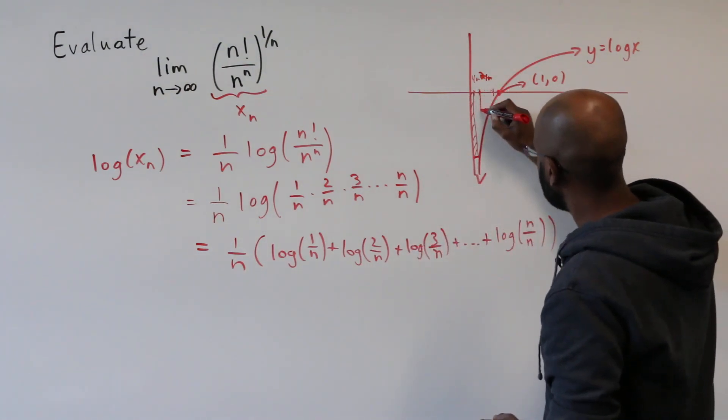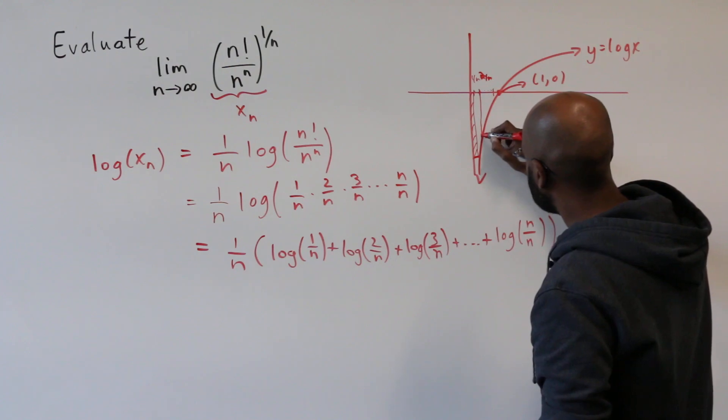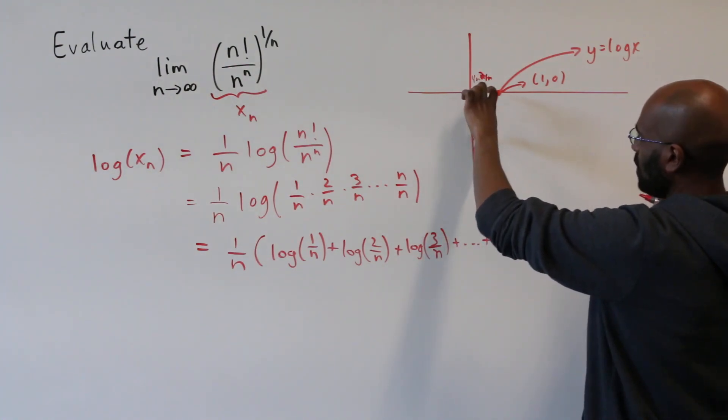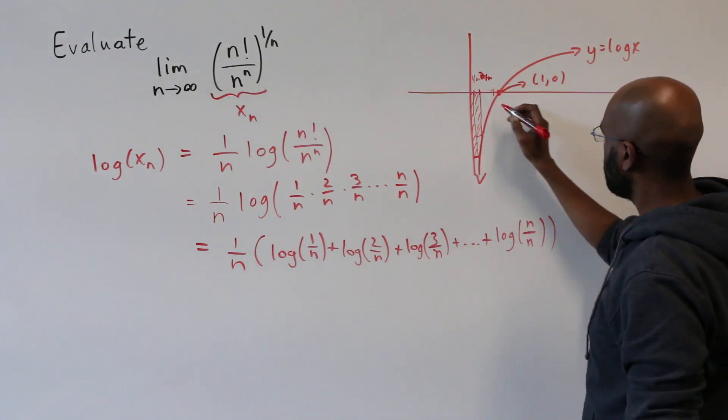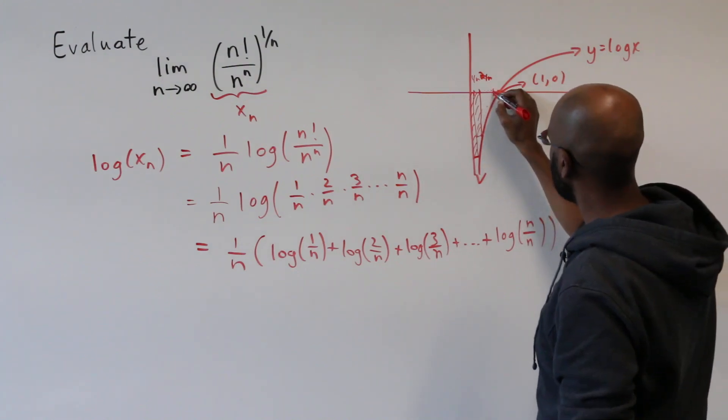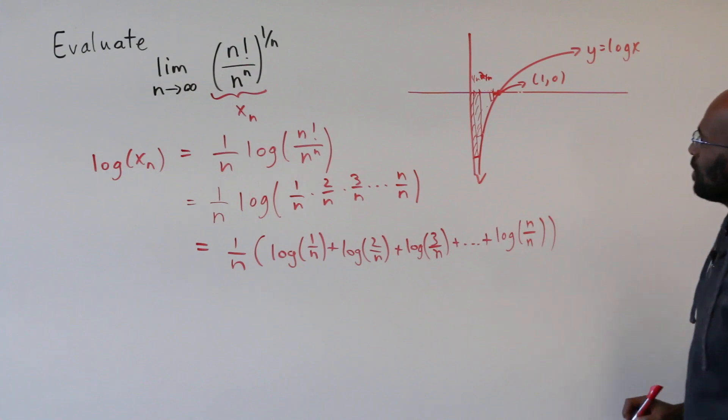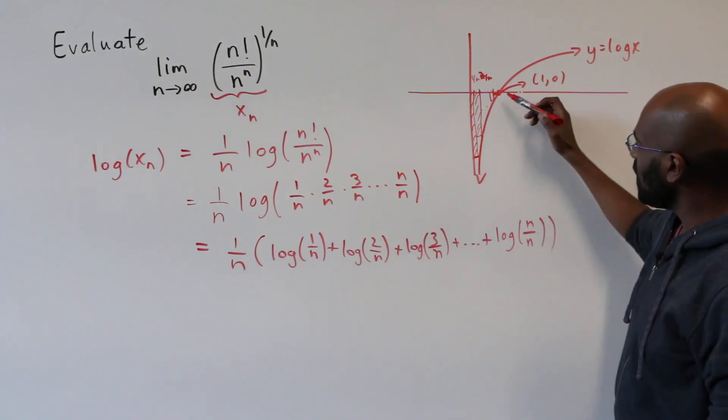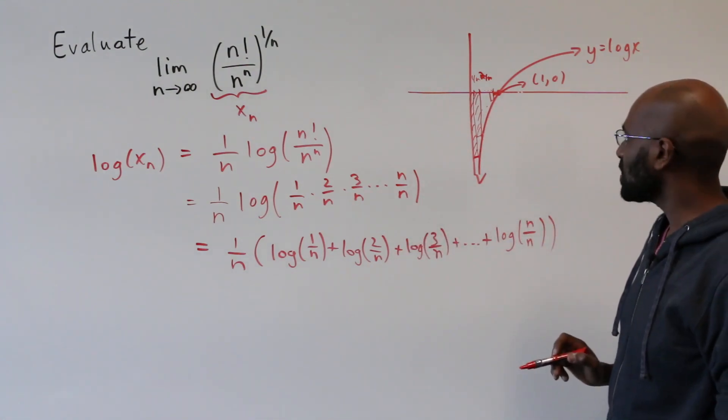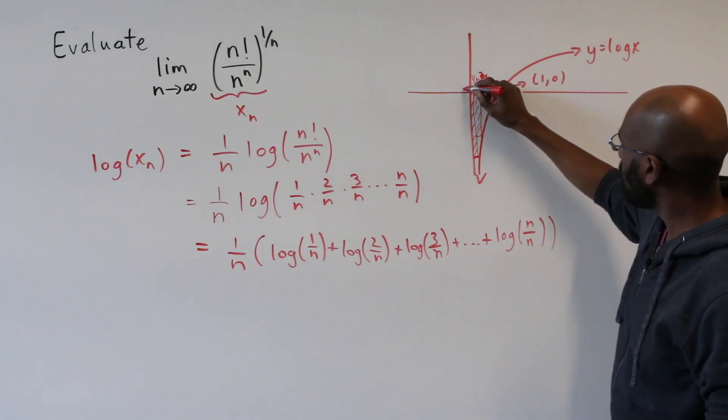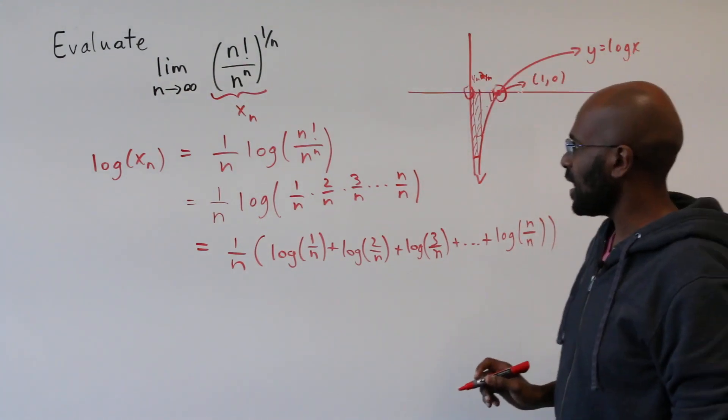Similarly, if we draw a rectangle to the graph here, it'll have base 1 over n and height log 2 over n, etc. So we can keep doing this here until the end. So what we have here is really a Riemann sum approximation of an integral. And it's the integral from 0 to 1 of this function log x.